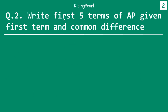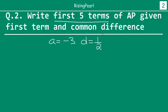Now again, let's find out the first 5 terms of an AP. This time our first term is given as minus 3 and the common difference is given as 1/2. We don't make it easy on ourselves, right? Alright, so the first term obviously is minus 3.